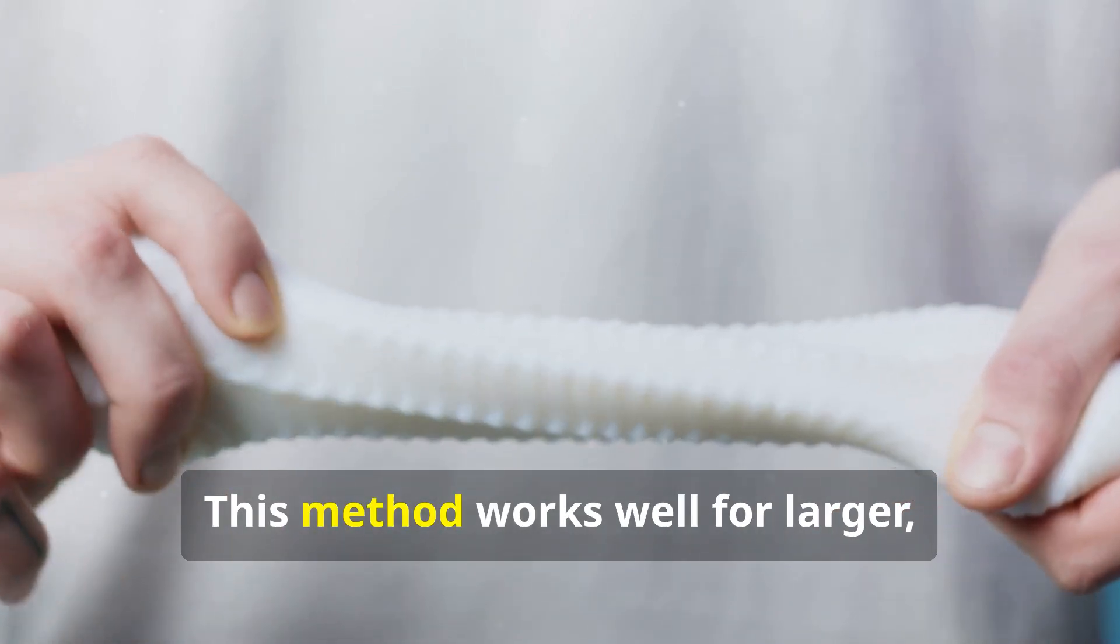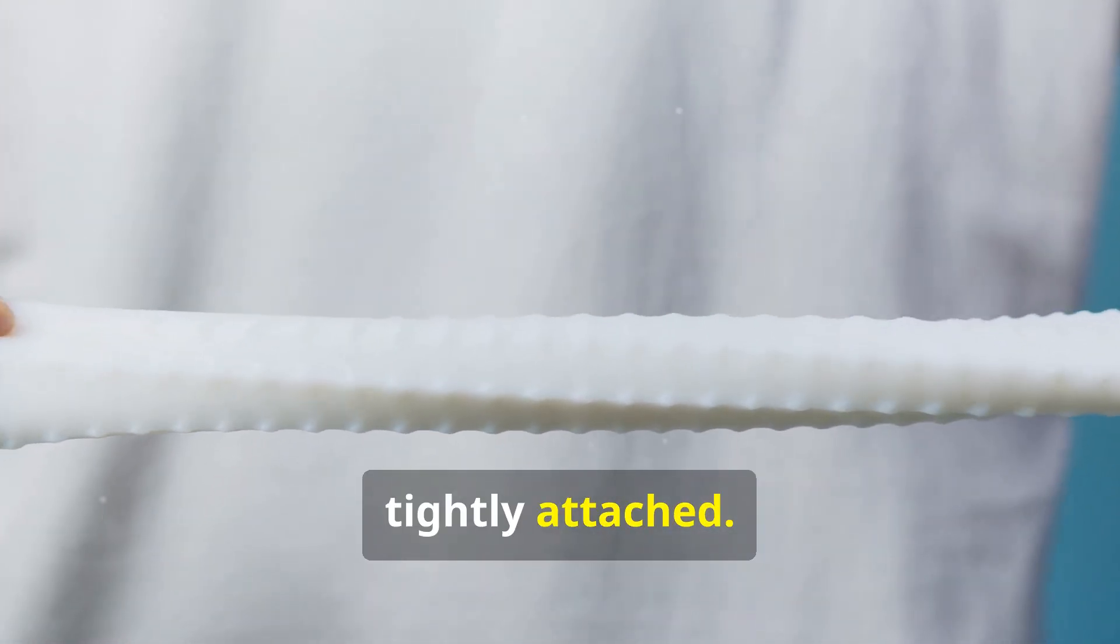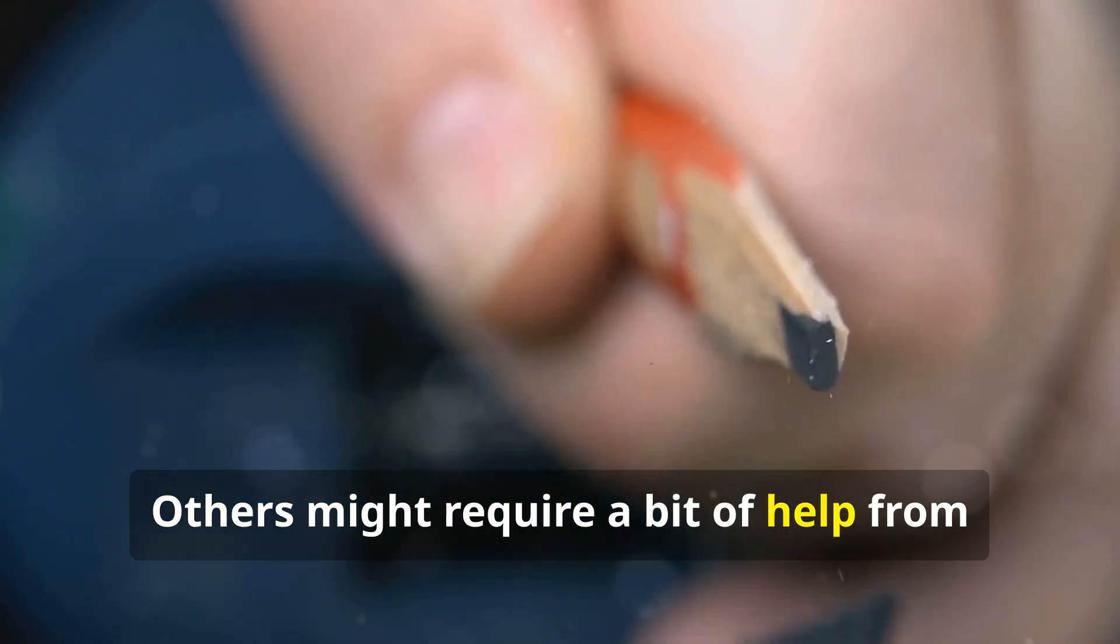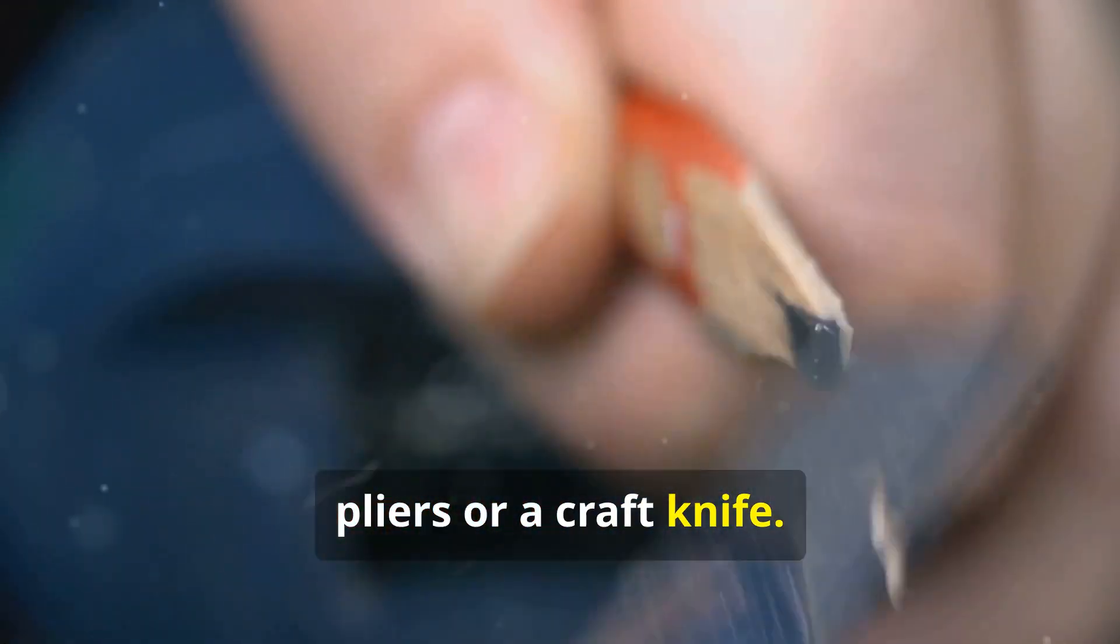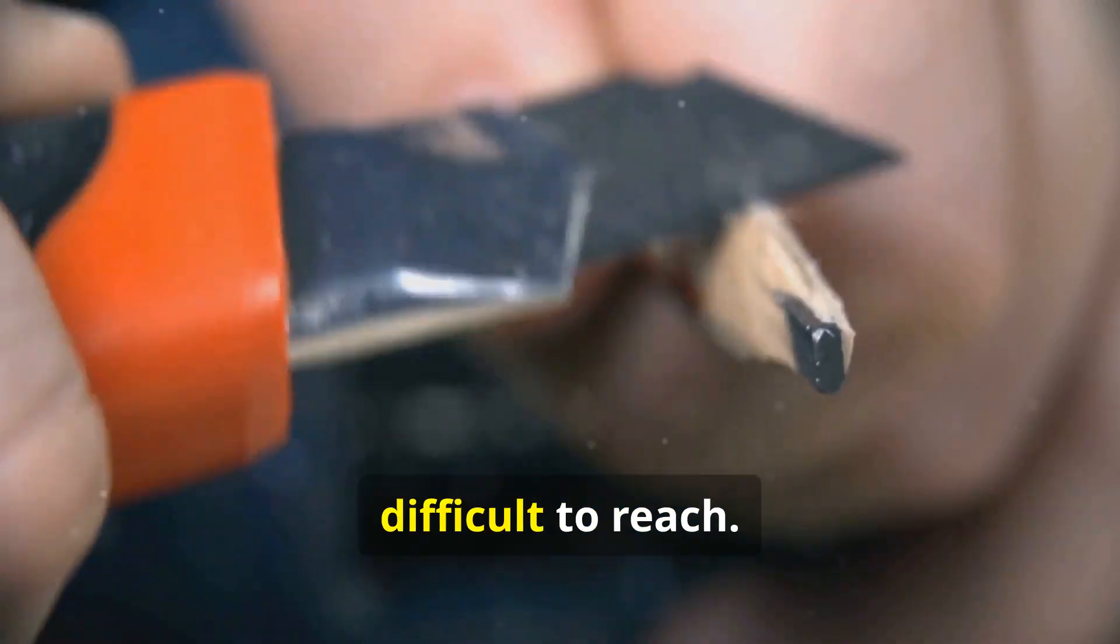For some supports, you can simply break them off with your hands. This method works well for larger, more accessible supports that are not too tightly attached. Others might require a bit of help from pliers or a craft knife. These tools are especially useful for smaller, more intricate supports that are difficult to reach.